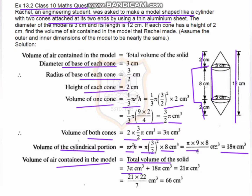The total volume of air contained in the model equals 3π + 18π = 21π. Putting the value of π as 22/7, we get 21 × 22/7 = 66 centimeter cube.